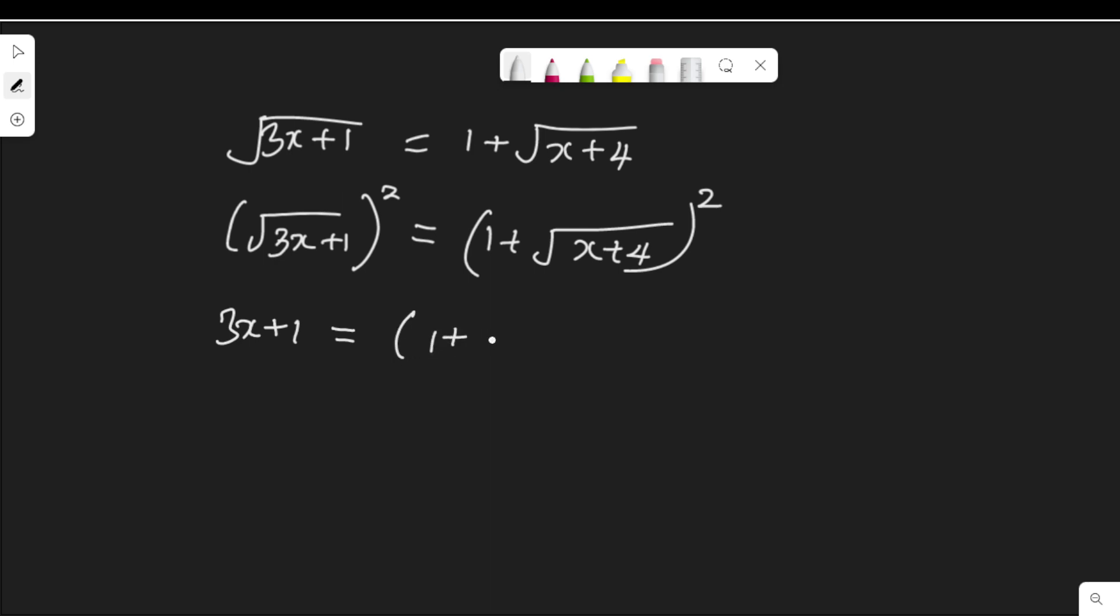I have (1 + √(x+4)) multiplied by (1 + √(x+4)). So 3x+1 equals 1 times 1, 1 times √(x+4) is √(x+4). √(x+4) times 1 is √(x+4). √(x+4) times √(x+4) is x+4.